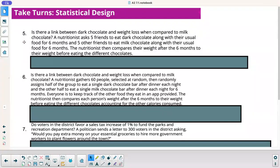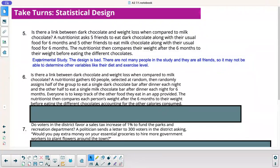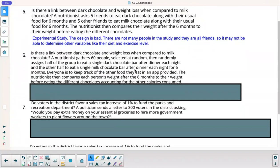All right. Number five. Is there a link between dark chocolate and weight loss when compared to milk chocolate? A nutritionist asks five friends to eat dark chocolate along with their usual food for six months, and five other friends to eat milk chocolate along with their usual food for six months. The nutritionist then compares their weight after six months to their weight before eating the different chocolates. Okay. This is an experimental study. They are trying to influence. This design is bad. There's not many people in the study. Two groups of five is very small. They're all friends. So you may not be able to determine other variables like diet and exercise level. If five of the friends are athletes and they work out a lot, that could influence the results. A lot of different variables there that are not going to answer that question. So that's a bad study.